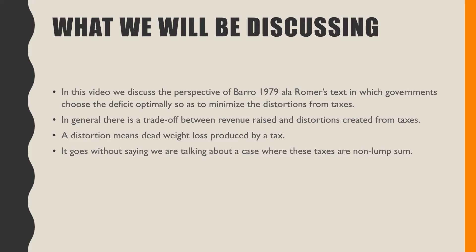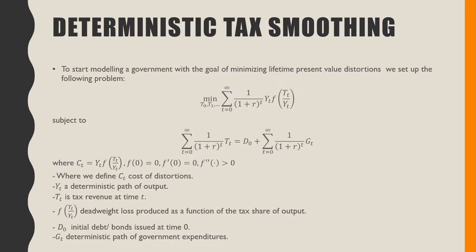A distortion means a deadweight loss produced by a tax - that's what is meant by the word distortion here. It goes without saying that we are going to be talking about the case where these taxes are non-lump-sum. To start modeling a government with the goal of minimizing present lifetime value of distortions, we set the following problem.